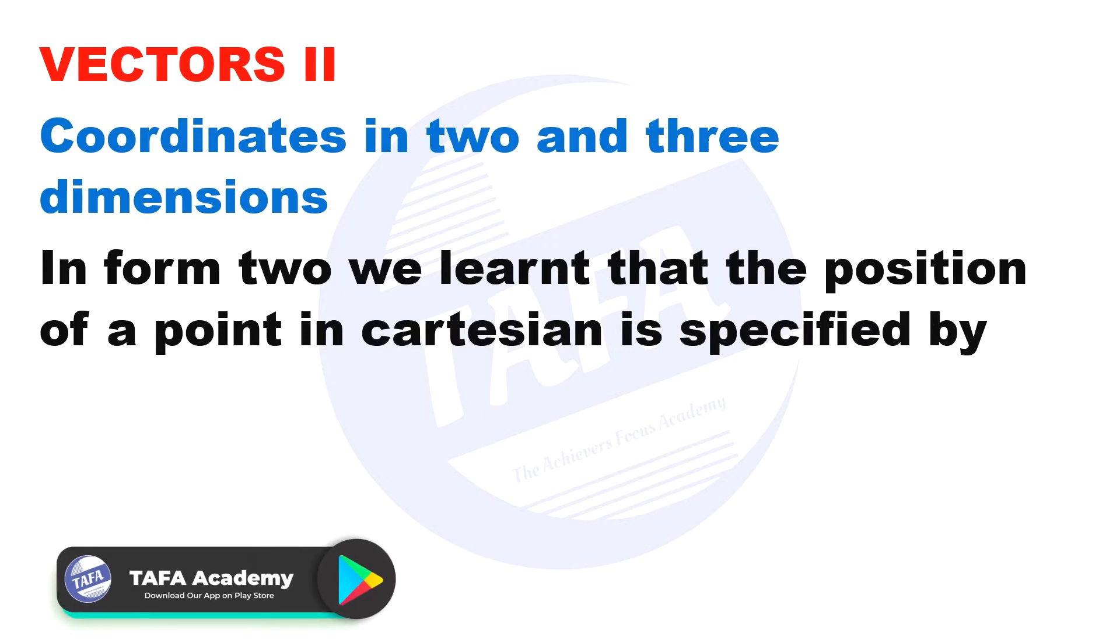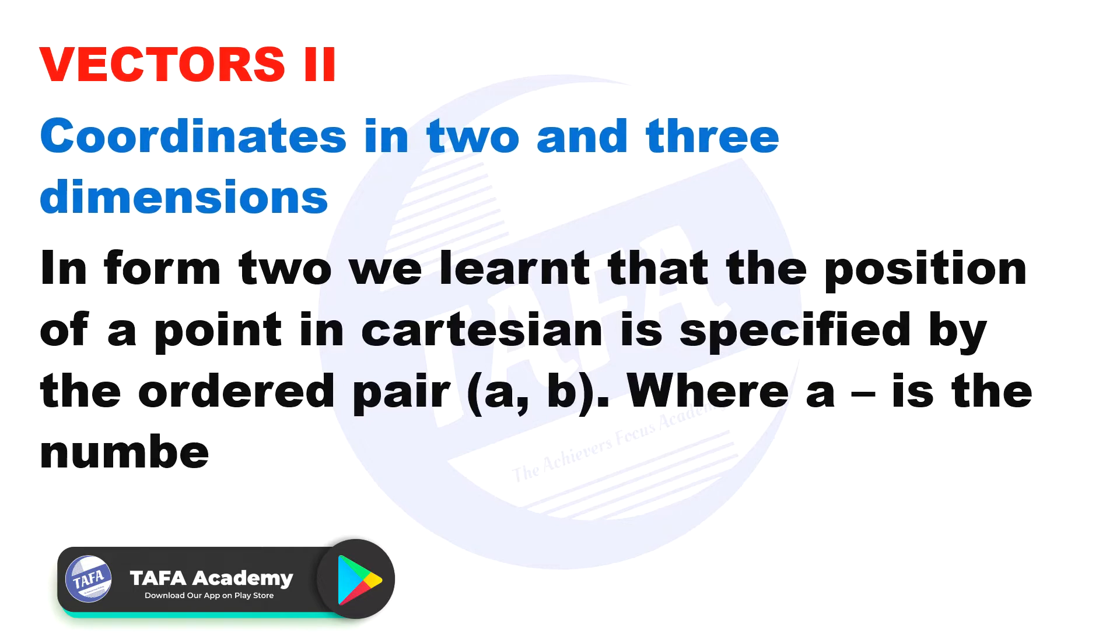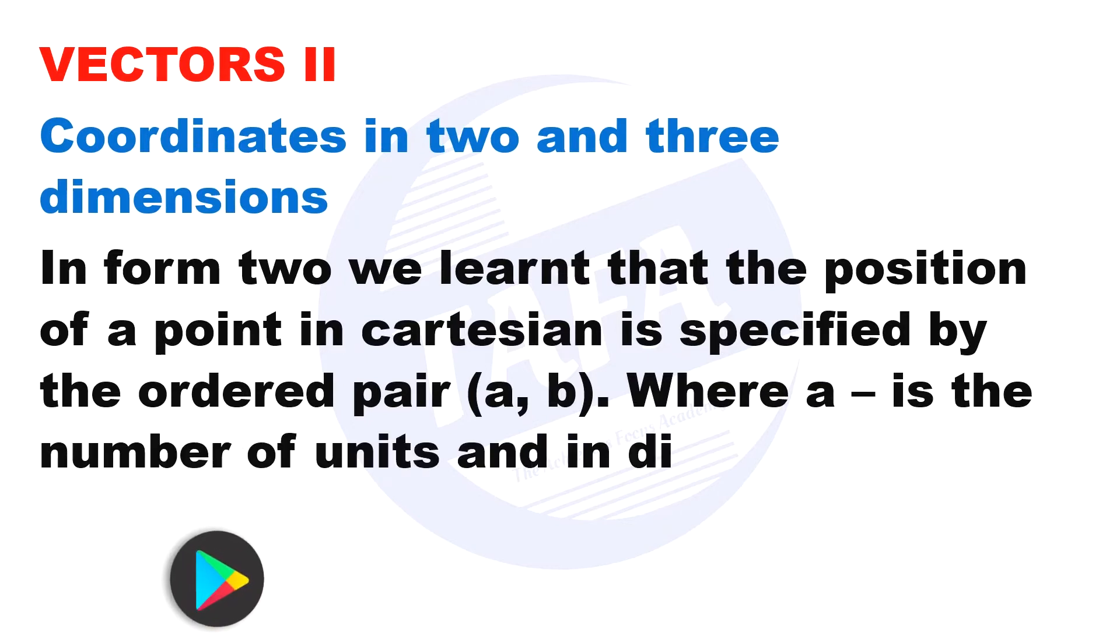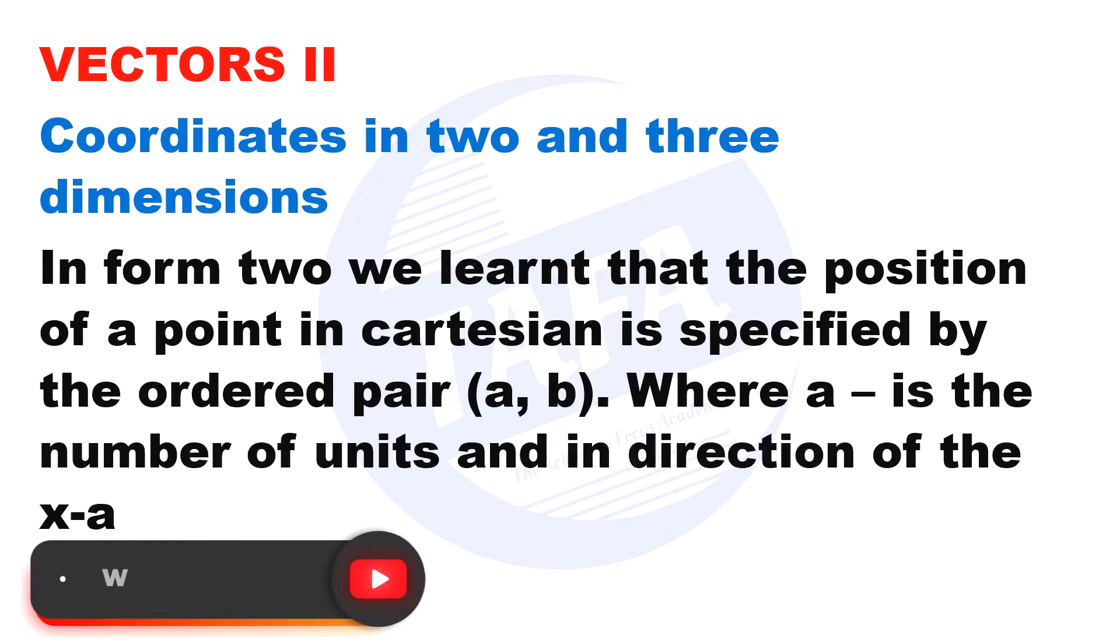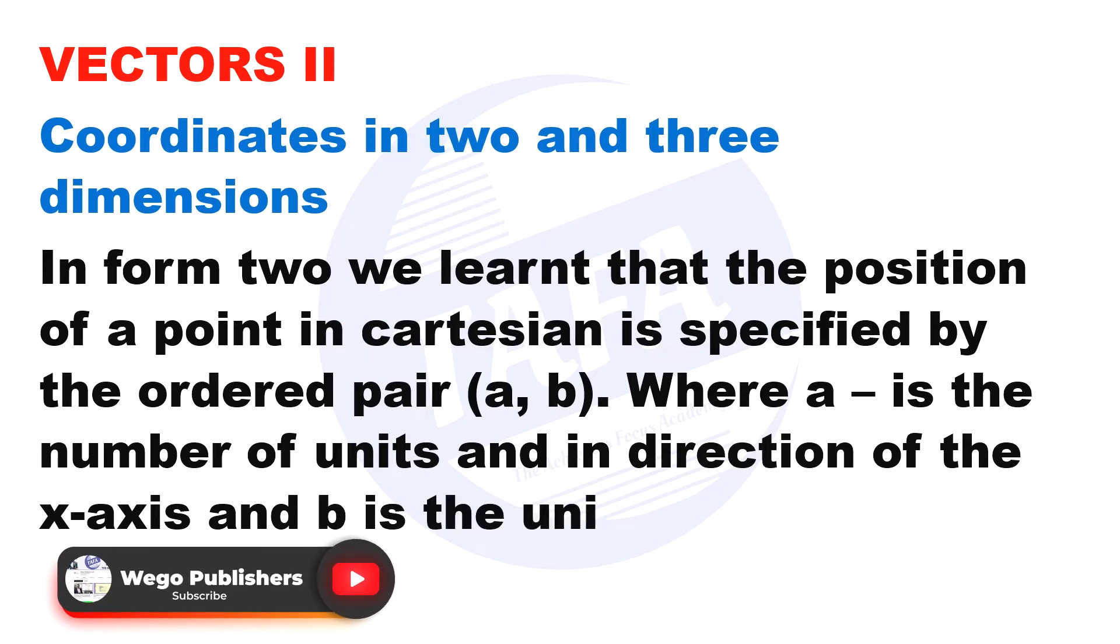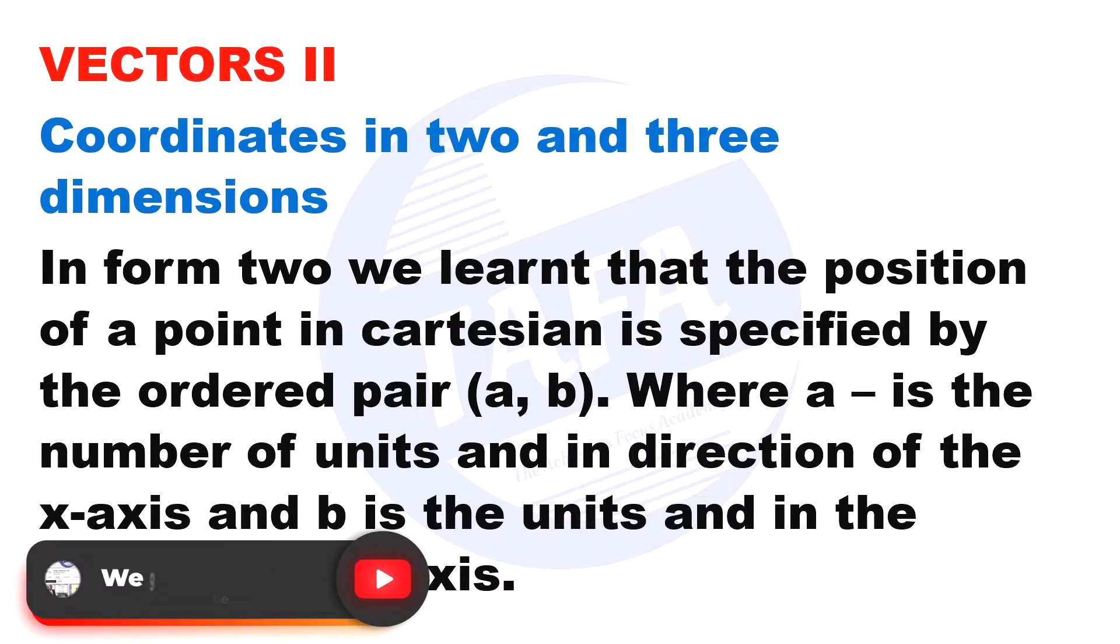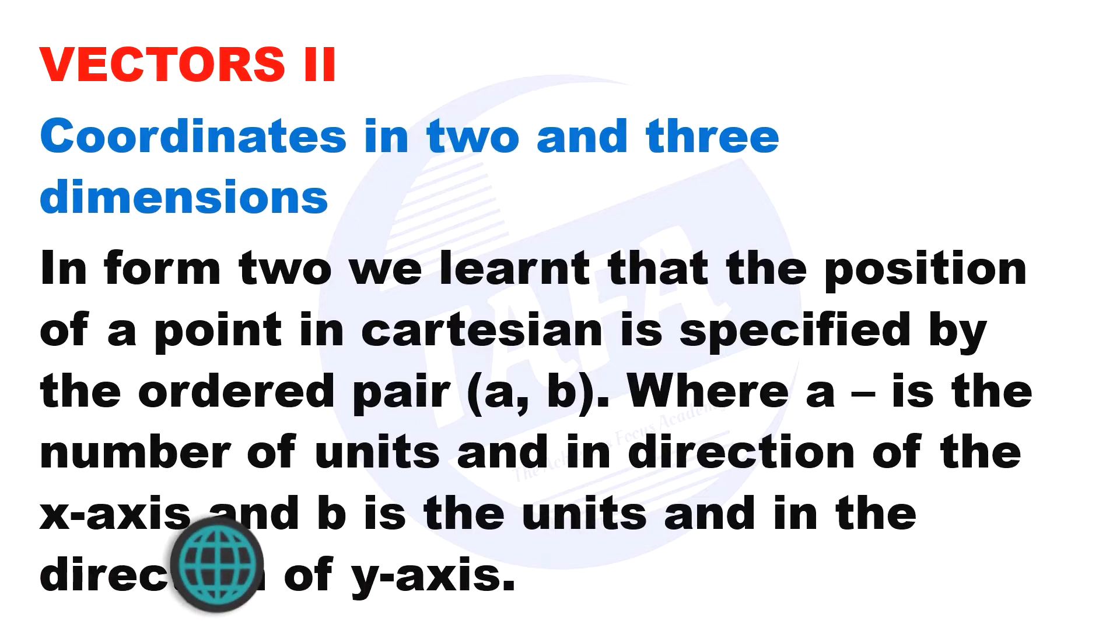As shown, where a is the number of units in the direction of the x-axis, and b is the number of units in the direction of the y-axis. This is shown in the diagram.